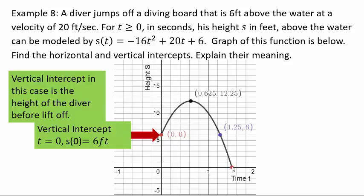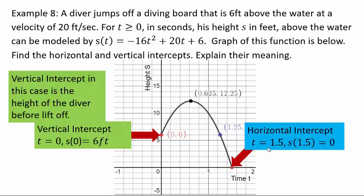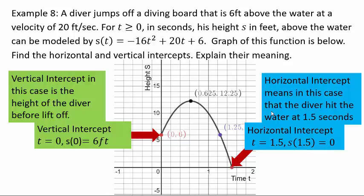This other number that's on the other side, the horizontal intercept, is the time at which the diver hits the water. So our horizontal intercept is at t equals 1.5 or s of 1.5 is 0. That's our horizontal intercept.